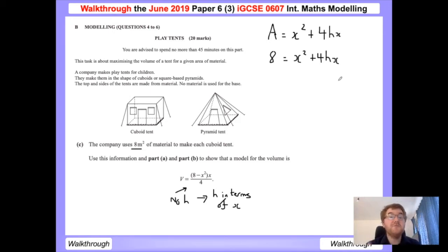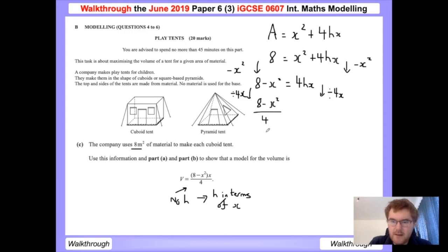So we get 8 equals x squared plus 4hx. We've now got a formula in terms of h and x, and we need to make h the subject. We do this through straightforward changing the subject. We minus x squared from both sides, giving us 8 minus x squared equals 4hx. Now we want to get h on its own. The opposite of timesing by four and x is dividing by four and x. So we get 8 minus x squared over 4x equals h.